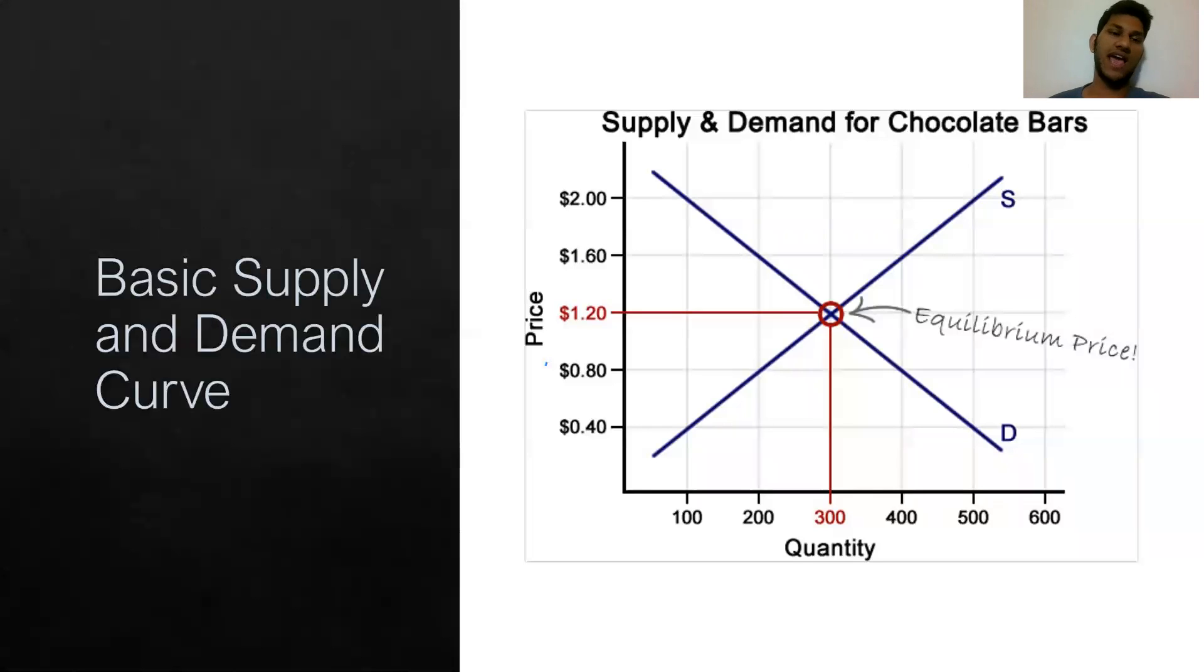And if you have a shortage or a surplus, neither of those things are necessarily a good thing. And that's how we end up just looking at the basic supply and demand curve. It might look simple, but there is a lot of interesting theory and logic behind it that's important to understand.